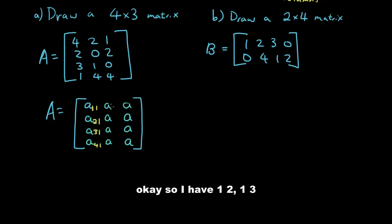So I have 1, 2, 1, 3, 2, 2, 2, 3, 3, 2, 3, 3, 3, 4, 2, 4, 2, 4, 3 and so on. Okay so that's how you refer to specific elements in a matrix.